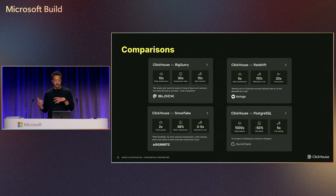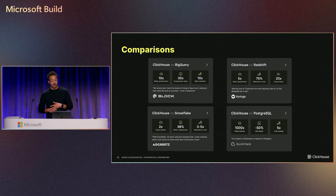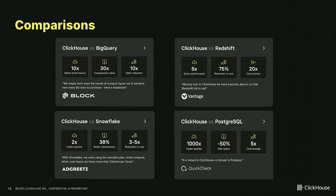In terms of comparisons, you can get an understanding of what our customers are saying about productivity and better cost. QuickCheck saw a 1,000x increase in query performance. Vantage saw their concurrency increase. And Block noted their compression ratio improved, and they saw storage costs come down as well.